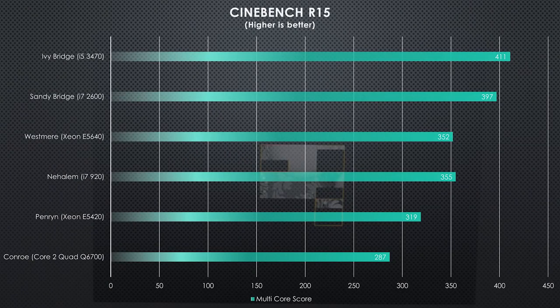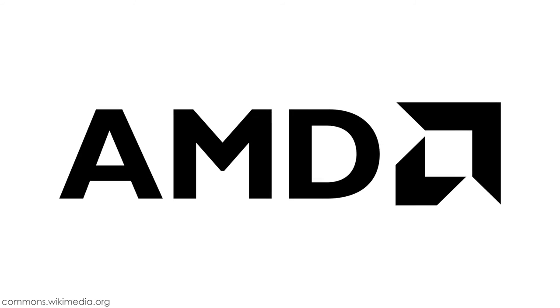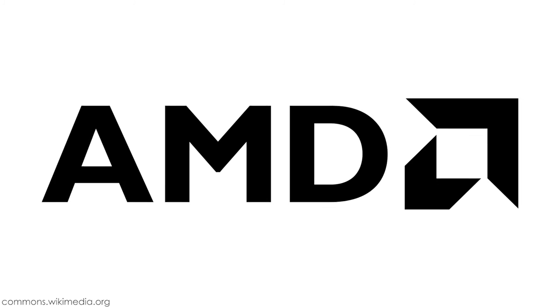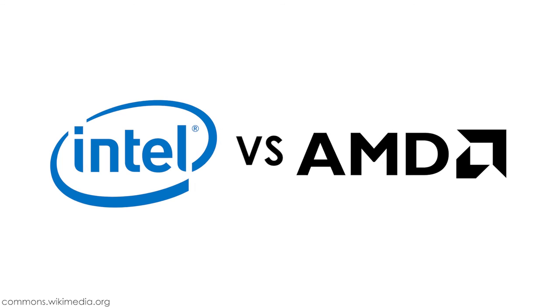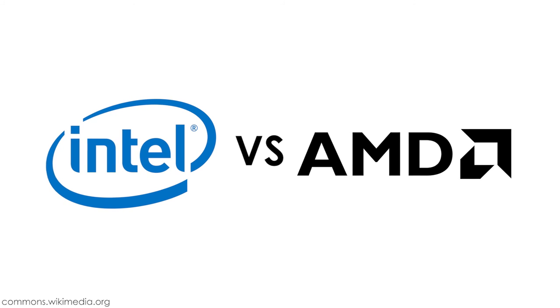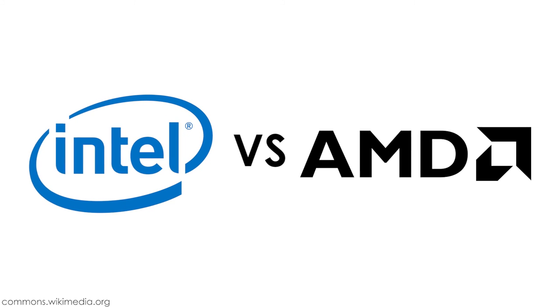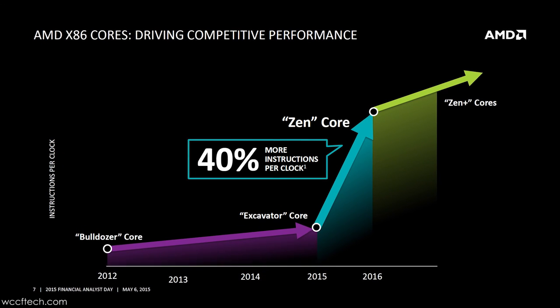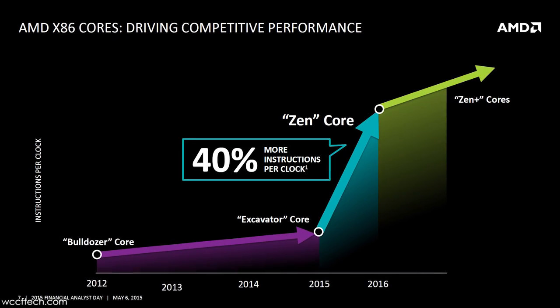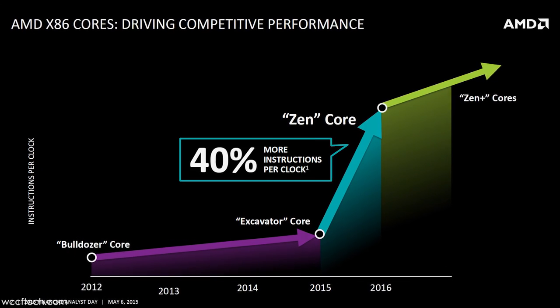Overall, Intel made big progress from 2006 to 2011, especially with the huge launches of Conroe and Nehalem. But perhaps because of that — or because AMD has been largely uncompetitive during the last 5 years — not much has happened since. Hopefully this will change with AMD becoming more competitive. There might be hope, as AMD's Zen architecture is right around the corner with big promises. But that's another topic for another day.